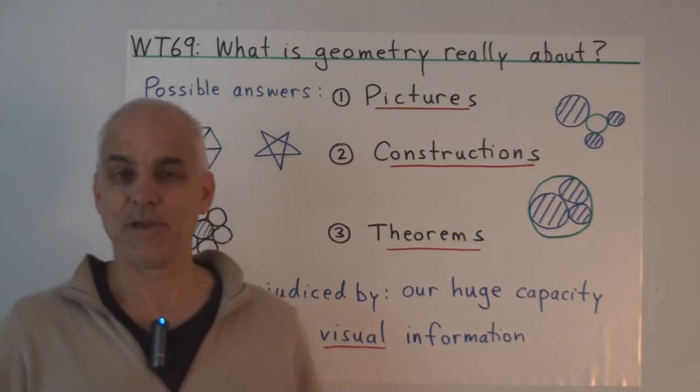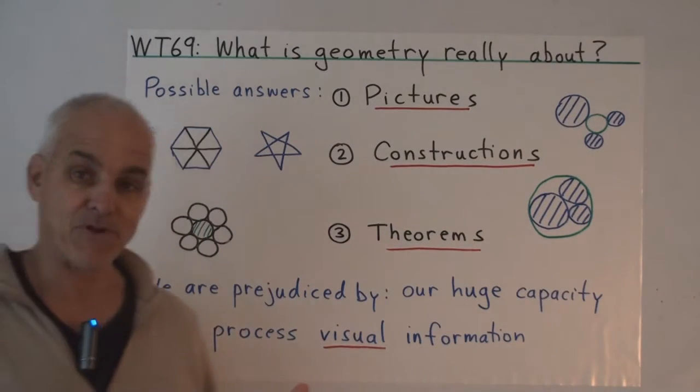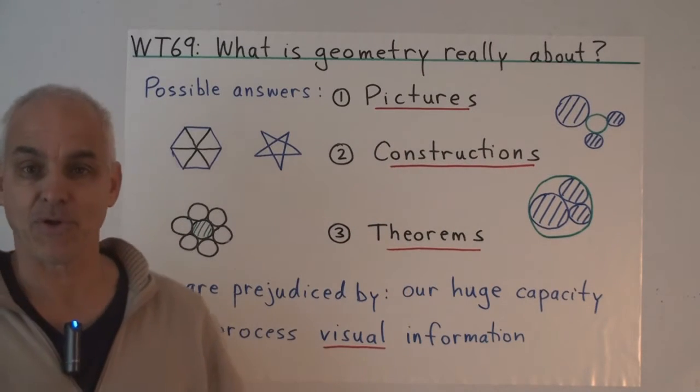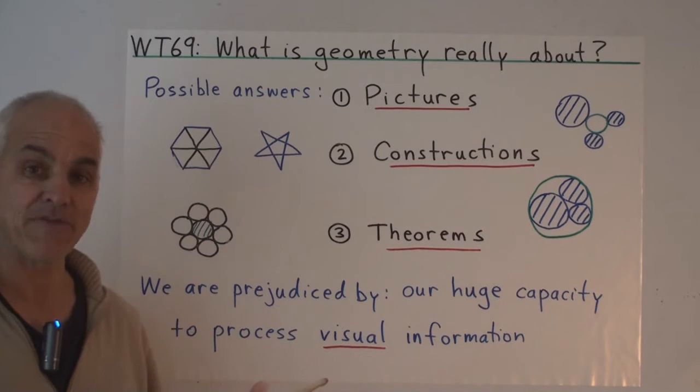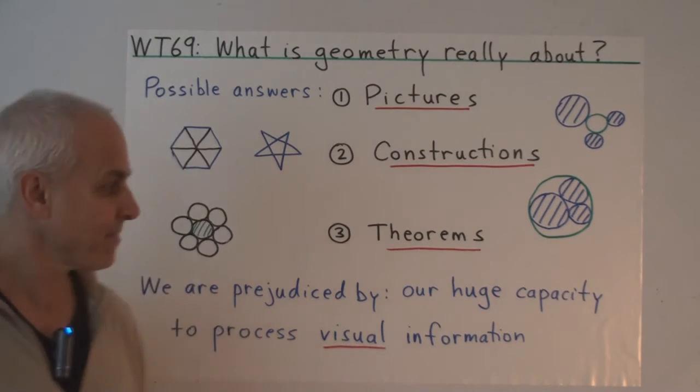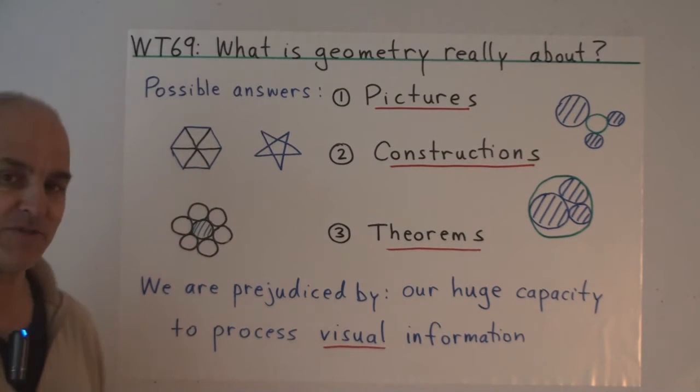Historically, we can give at least three possible answers to this question. Probably long before geometry was studied formally, people were interested in pictures with a geometrical content. Artists and craftsmen would have created patterns like this involving geometrical objects. So at some point, for example, someone probably realized that you could put six equal circles around a circle, that a hexagon was composed of a bunch of equilateral triangles, that a pentagram was an interesting kind of pattern.